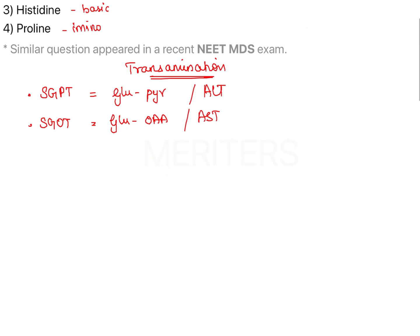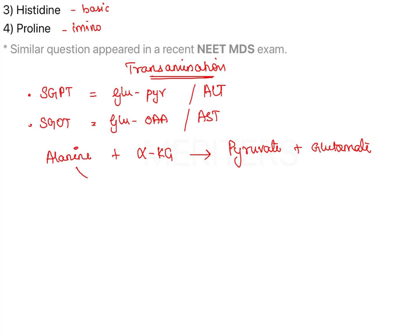Let me write down the reactions so it will be easy to understand. In the case of SGPT, the amino acid alanine transfers its amino group to alpha-ketoglutarate, resulting in the formation of pyruvate and glutamate. That is, alanine gets converted into pyruvate and alpha-ketoglutarate becomes glutamate.